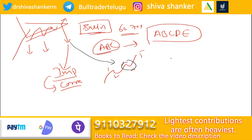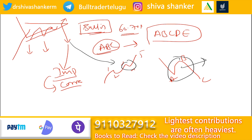In the corrective wave, we have A, B, and C. If we have to identify the B wave, we have to look for this triangle pattern within the B wave position.